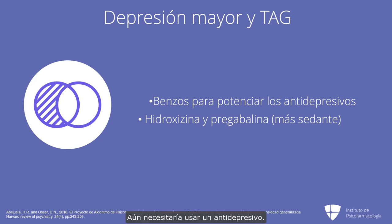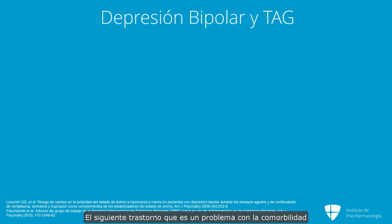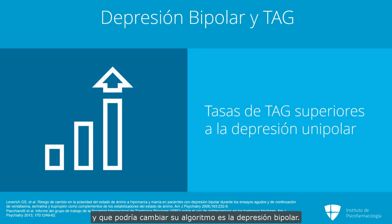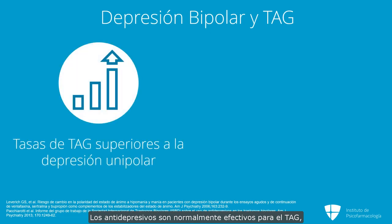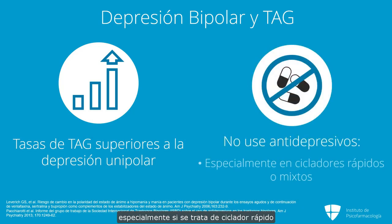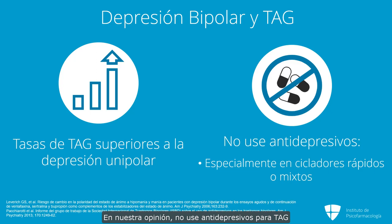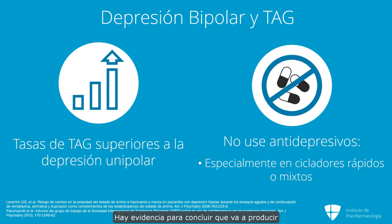The next comorbidity that could change your algorithm is bipolar depression. Rates of GAD are actually higher in bipolar depression compared to unipolar depression, so you'll see this combination frequently. Antidepressants are normally effective for GAD, such as SSRIs, but we do not recommend them for bipolar depression — especially if the patient is a rapid cycler (more than four episodes a year) or has mixed states. Even if they're not rapid cycling or mixed, evidence shows that adding antidepressants produces greater mood destabilization.